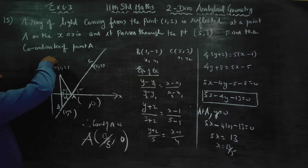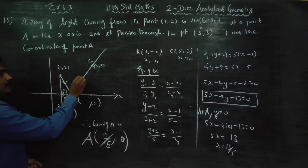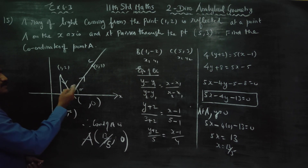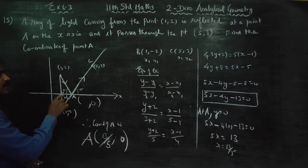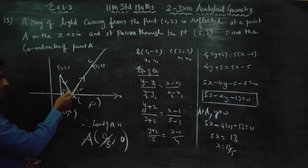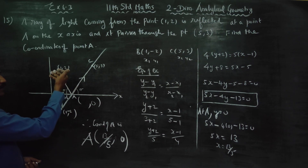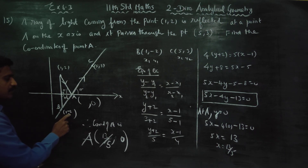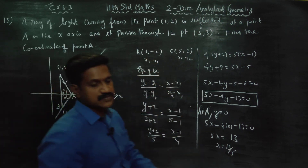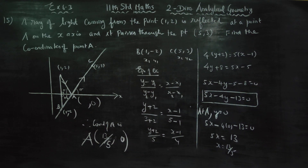The concept used here: the light ray comes and reflects, so angle of incidence equals angle of reflection. Vertically opposite angles are equal. These two angles are equal, the perpendicular gives 90 degrees, and this is the common side. So the two congruent triangles show the distance is equal. The point above is (1,2) and the reflection below is (1,-2) because it is in the fourth quadrant, so y becomes negative. We fix point B as (1,-2), find the equation of straight line BC, and to find point A, put y equal to 0 — that gives the x-intercept, which is the answer.